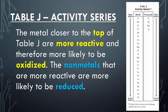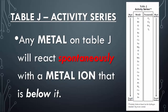The metals closer to the top of Table J are more reactive and therefore more likely to be oxidized. The nonmetals that are reactive are more likely to be reduced.